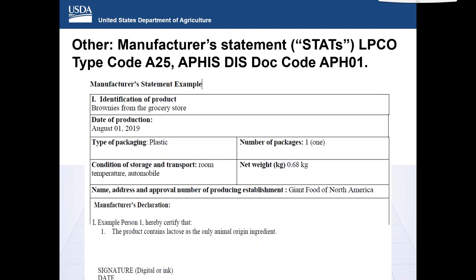This slide shows a fictitious example of a manufacturer statement, which is used for the importation of certain animal products. Such manufacturer statements may colloquially be referred to as STATs, and include documents such as manufacturer statements, producer statements, or shipper statements. These documents encompass the 'O' or 'other' in the acronym LPCO. STATs may be needed based on an APHIS Veterinary Services issued permit or other animal product import guidance. STATs can be submitted via DIS and are not required to be submitted in paper. Their presence should be noted in PG-13-14 using PG-14 LPCO type code A25, and the DIS submission should use APHIS DIS document code APH01.